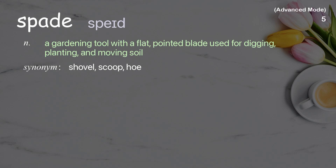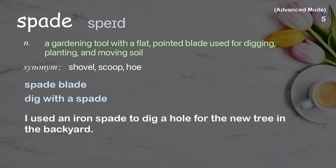Spade: a gardening tool with a flat pointed blade used for digging, planting, and moving soil. Examples: spade blade, dig. With a spade — I used an iron spade to dig a hole for the new tree in the backyard.